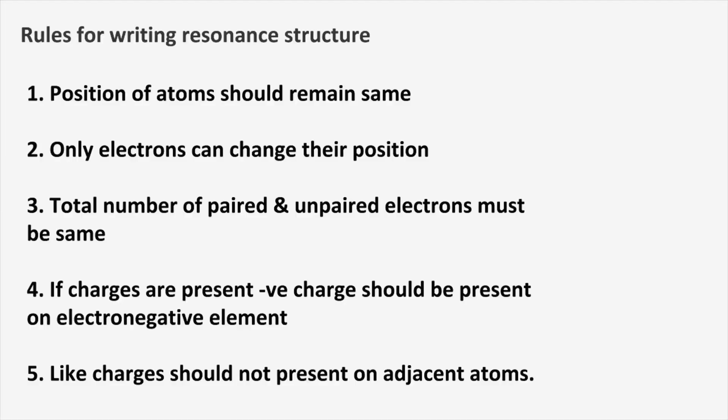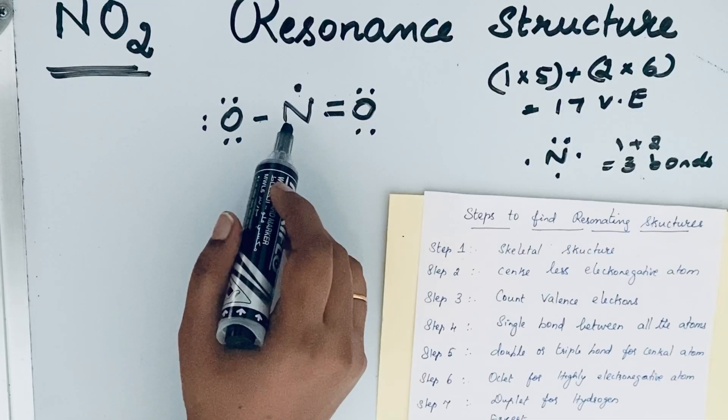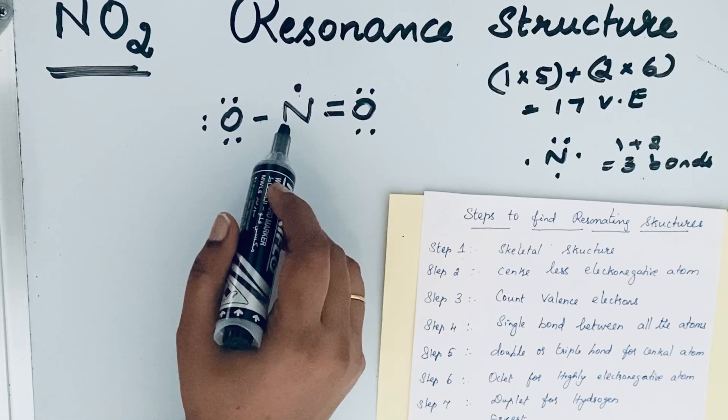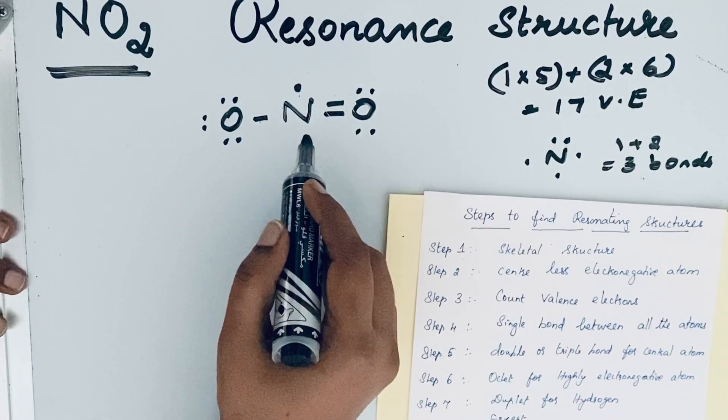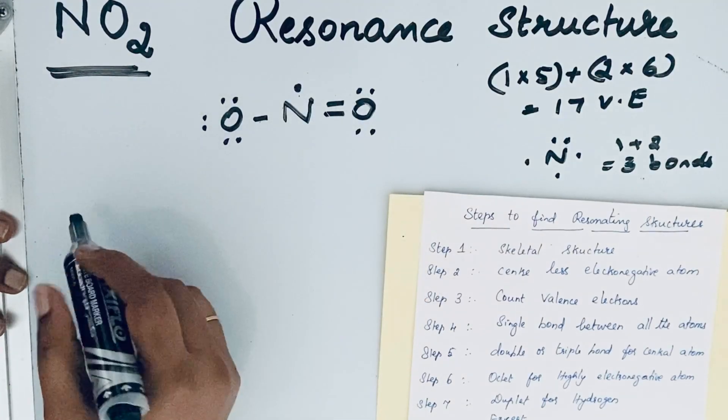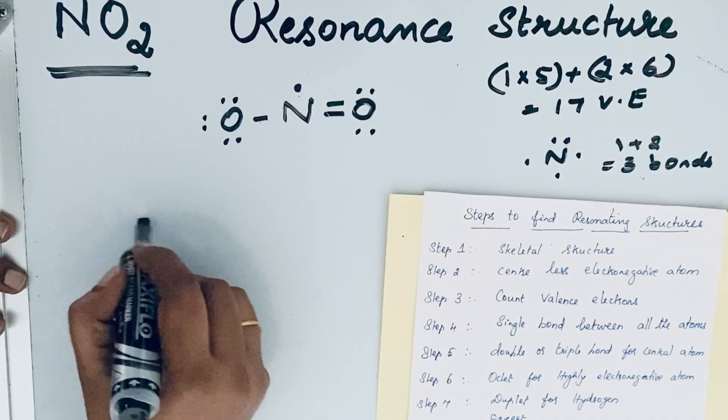When writing a resonating structure, there are rules you must follow. You can change only the position of bonds or electrons — not the atoms. At the same time, the total number of electrons, whether paired, unpaired, or bond pairs, must remain the same. Keep this in mind as we proceed.